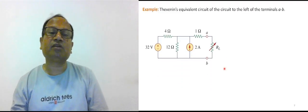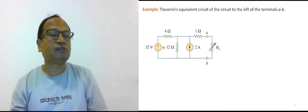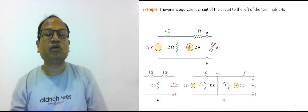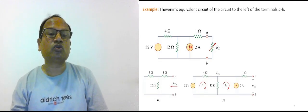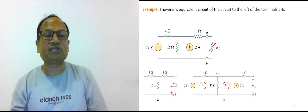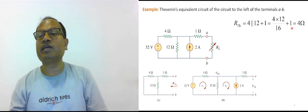Let's take one example of the Thevenin equivalent circuit. There is a network with two sources: a voltage source of 32 volts and a current source of 2 amperes. To determine the Thevenin resistance, the current source becomes open circuit and the voltage source is replaced by a short circuit. So 4 ohm is in parallel with 12 ohm, and in series with 1 ohm. The Thevenin resistance seen by the load is 1 + (4 parallel 12), and you get 4 ohm.